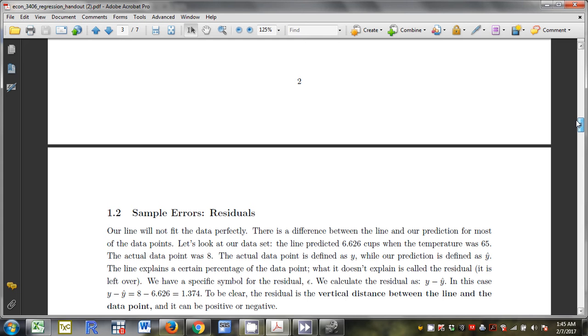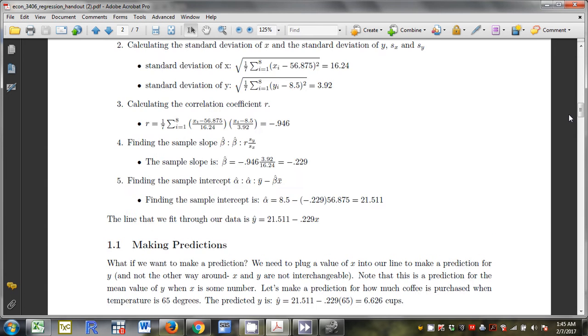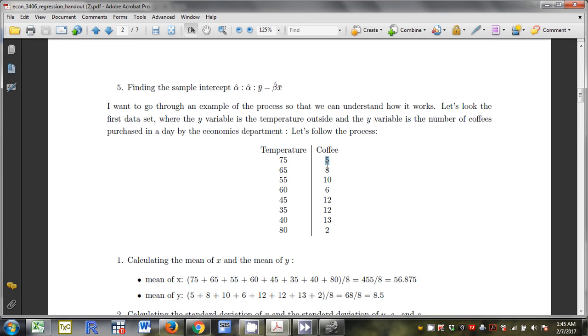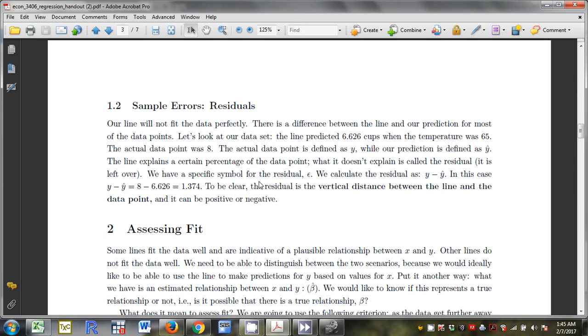And our line won't fit the data perfectly. So there's going to be a difference between our line and the prediction for the most part. We're not going to hit everything on the dot. So the line is our prediction and it may differ from the data. Let's take a look at the data set. The line predicted 6.62 cups when the temperature was 65. We actually purchased 8 as you can see here. So 8 is the actual data. I subtract 6.626 and 1.374 is what we call a residual.